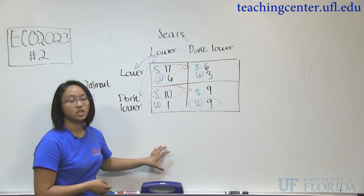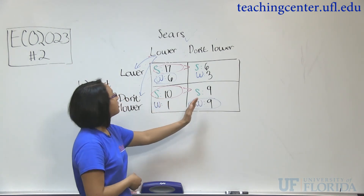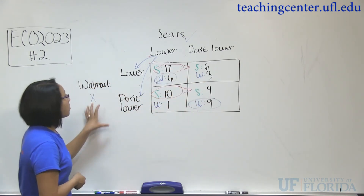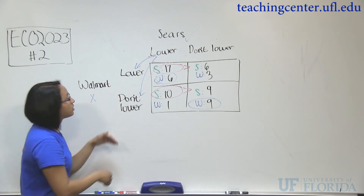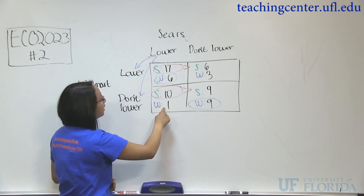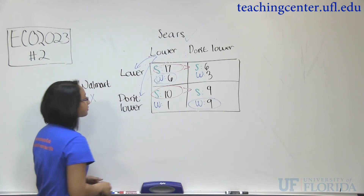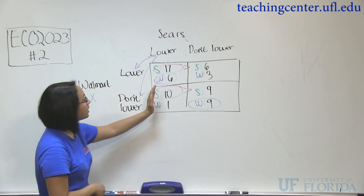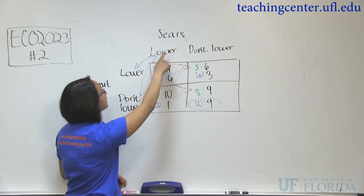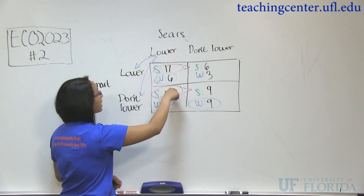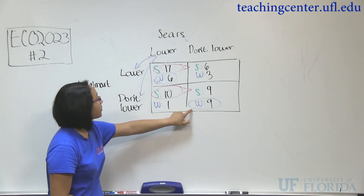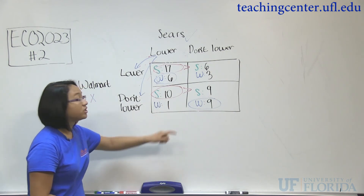With a dominant strategy, you need to compare the columns for Sears — we compared 17 versus 6, and then 10 versus 9. For Walmart, since it's on the horizontal side, we compared the rows: 6 with 1, and 3 versus 9. Remember to compare rows for Walmart and columns for Sears. If you have an entire option that was better — like we had for Sears, where we always lowered our prices — you'll have a dominant strategy. For Walmart, because we either lowered or didn't lower depending on the scenario, we don't have a dominant strategy. That's how you solve game theory.